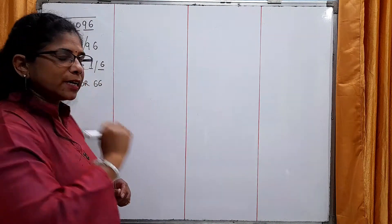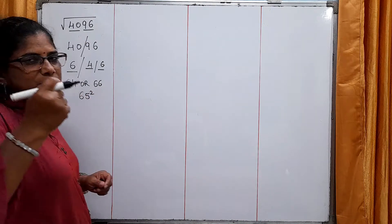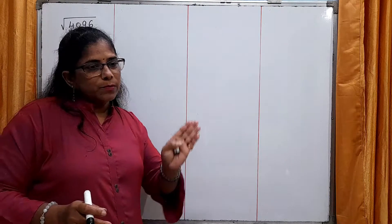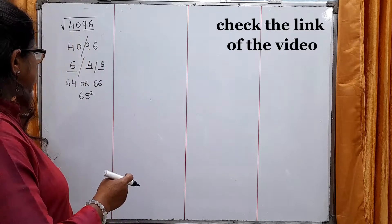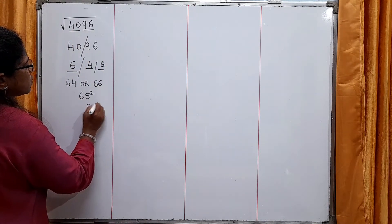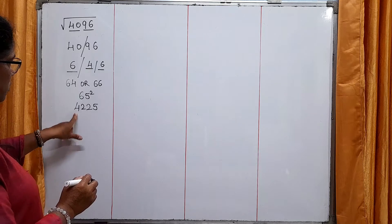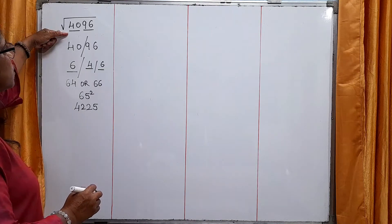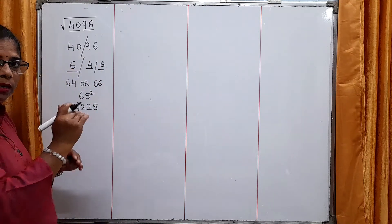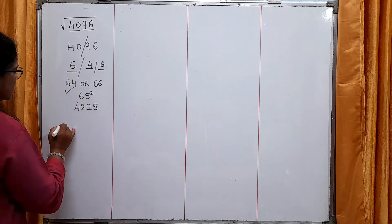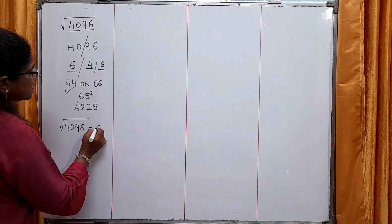Now, how to check which is the correct answer? We find the square of 65. We have one simple method: how to find the square of a number ending with 5. Just in two seconds — 65 squared: 5×5 is 25, and 6×7 is 42, so 65 squared is 4,225. Our number is 4,096, which is less than 4,225. So here we have to select 64. Therefore, the square root of 4,096 is 64.